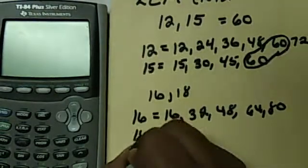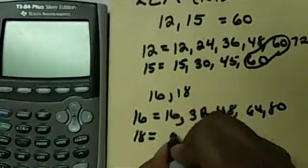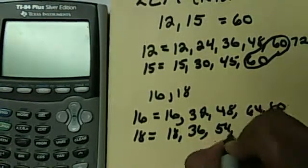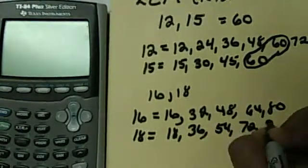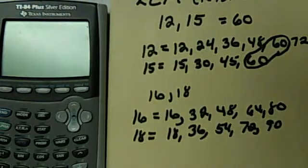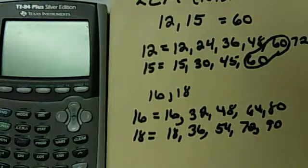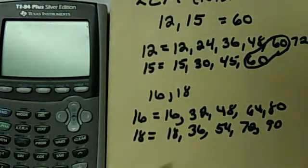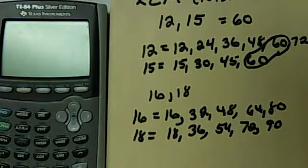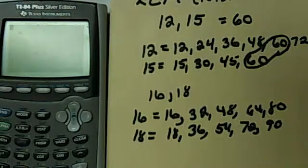And then I'm going to list the multiples of 18: 18, 36, 54, 72, 90. And look, I've already gone 5 in and I still don't have an LCM. So we're going to use our calculator because we don't want to use the list method and be listing these for a long time for large numbers. So we're going to turn our calculator on.